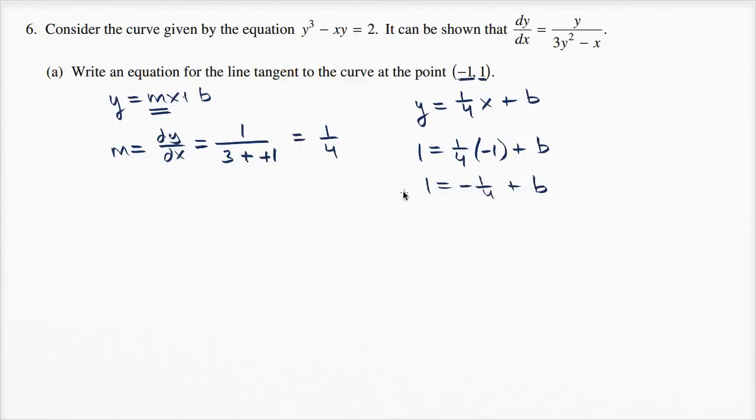Add 1/4 to both sides to get b = 1 + 1/4 = 5/4 = 1.25.